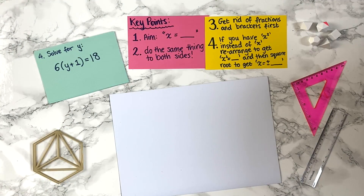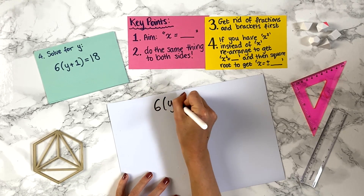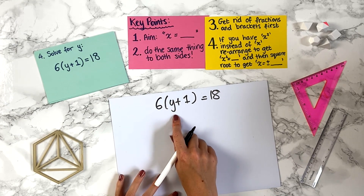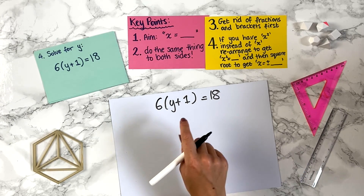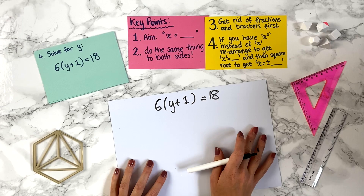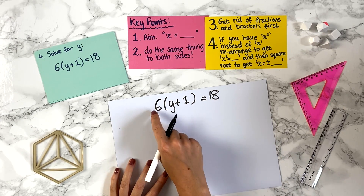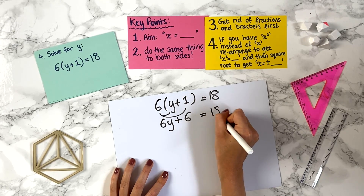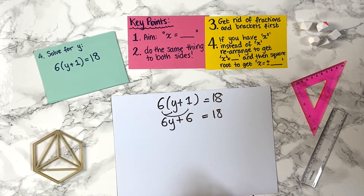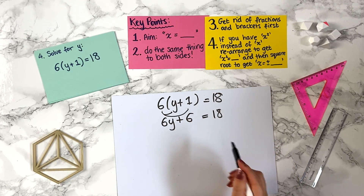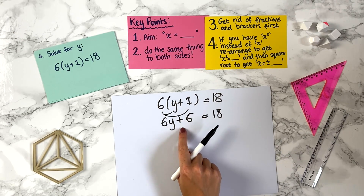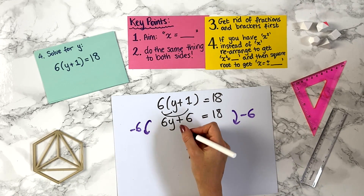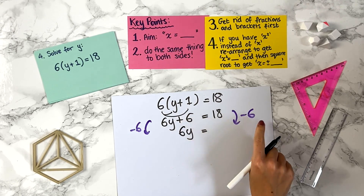Question 4: solve for y — 6 times (y plus 1) equals 18. Don't be put off by y instead of x — it's exactly the same thing, we just want y equals something. There are brackets, so key point 3 applies: expand them first. 6 times y is 6y, and 6 times plus 1 is plus 6, giving 6y plus 6 equals 18. To collect y terms on the left, we minus 6 from both sides: 6y plus 6 minus 6 gives 6y, and 18 minus 6 gives 12.